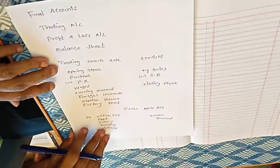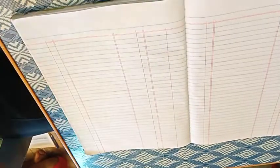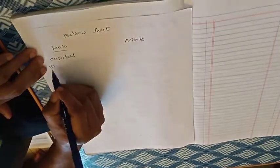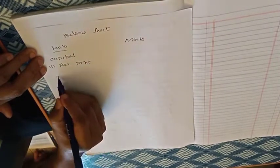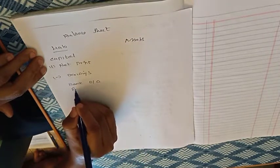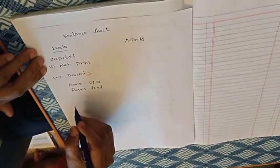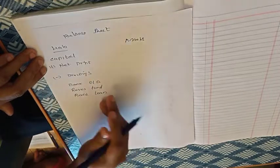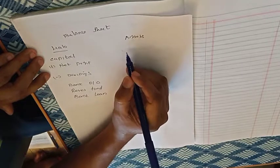Now the balance sheet. On the liability side we have: Capital plus Net Profit minus Drawings, Bank Overdraft, Reserve Fund, and Bank Loan. These are the liabilities — amounts we have to pay.